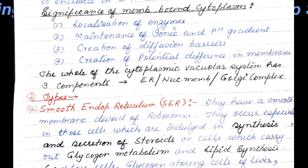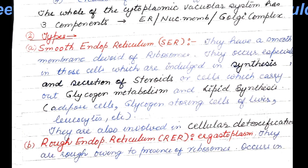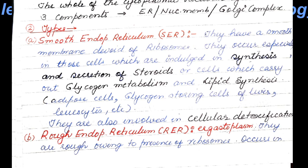Smooth endoplasmic reticulum performs different functions: it is involved in secretion and synthesis of steroids, glucose metabolism, glycogen metabolism, and lipid synthesis. One more vital function performed by the smooth endoplasmic reticulum is cellular detoxification.